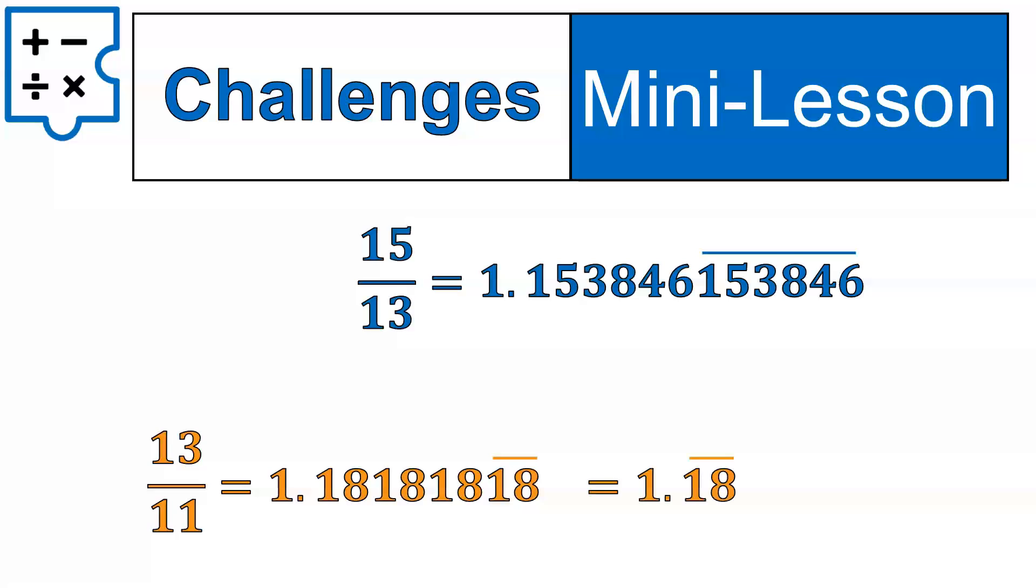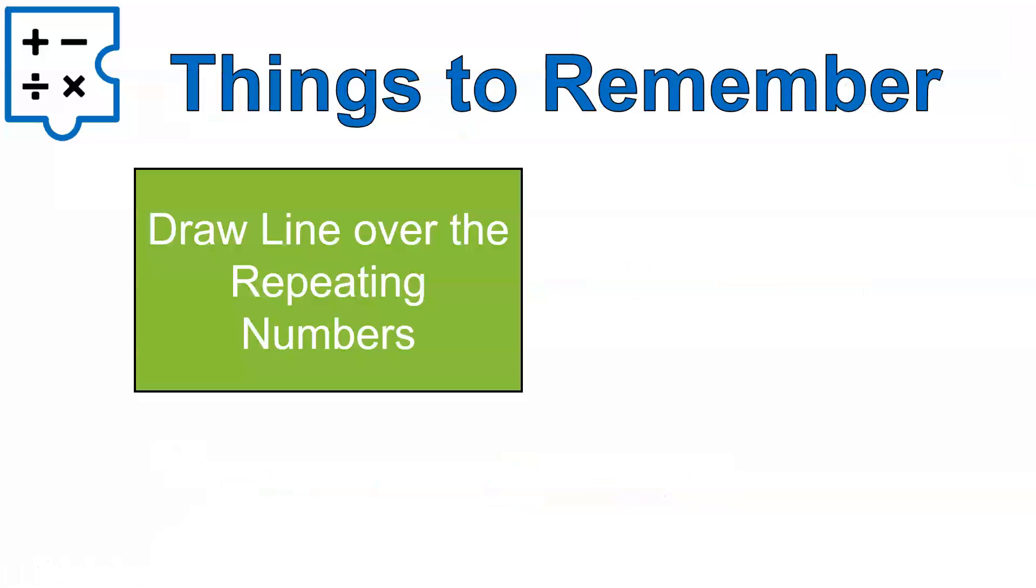There we go. You can also write it as 1.18 and put the line over it like this. In most of the examples I've shown, I tend to write it out at least twice, but you can just write it out like this, and that's a more simplified way of doing it. It's absolutely correct to do it like that, and it works out fine. The thing to remember is to draw a line over the numbers that are repeating. That's the best and most accurate way to write repeating decimals. I hope that the practice with feedback has been helpful for you today. Have a wonderful day.